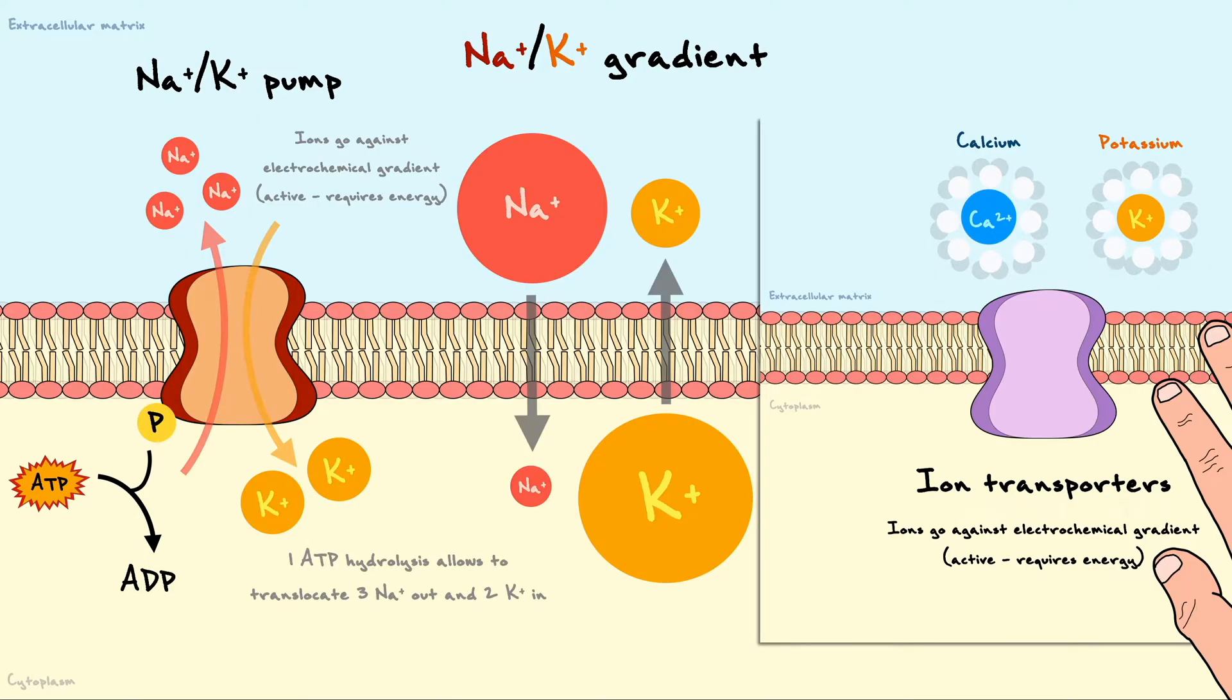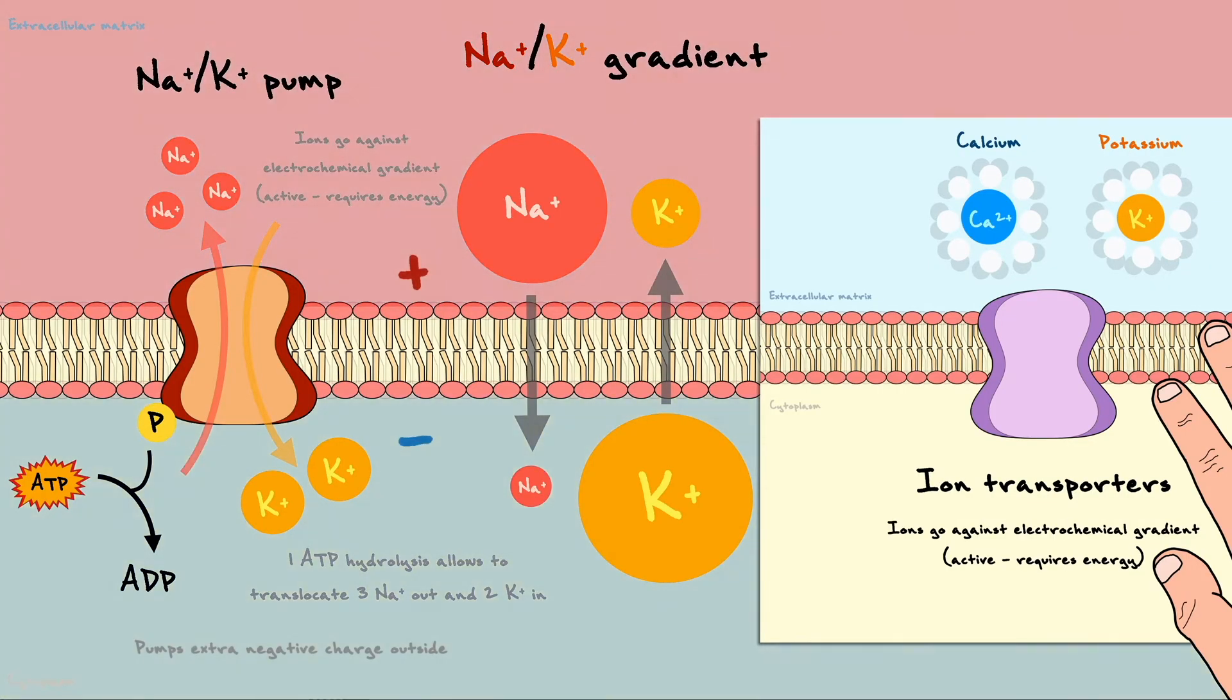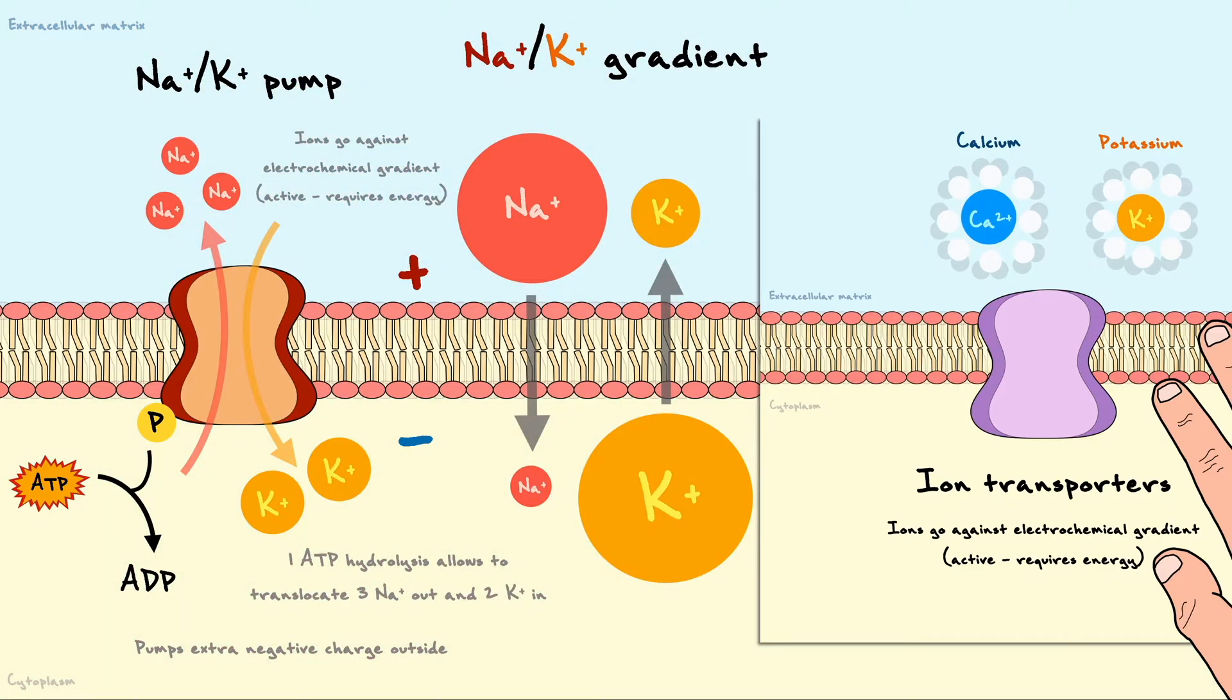You can notice that one consequence, along with the creation of concentration gradients, is the creation of a net positive charge on the extracellular side due to the extra positive charge exported in the sodium. Hence, it will be good to keep in mind that this protein also contributes to the membrane potential.